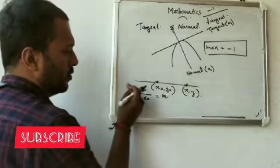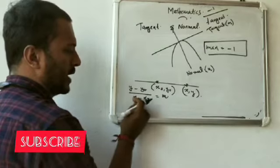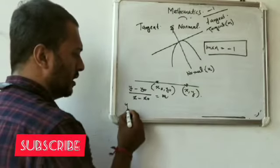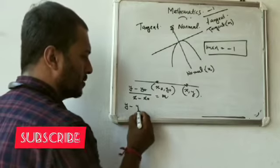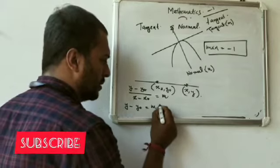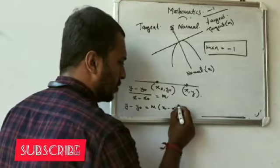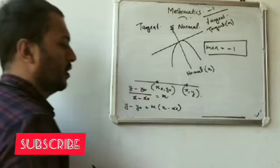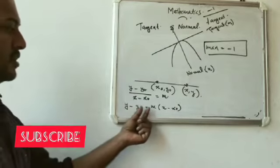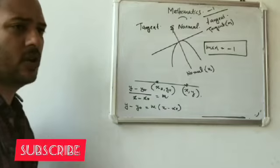If you look at y minus y0: y minus y0 divided by x minus x0 is equal to slope. Then y minus y0 is equal to m into x minus x0.